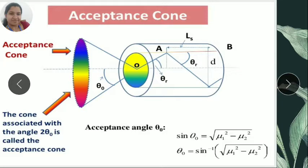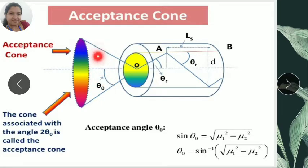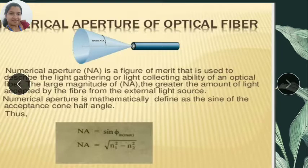The acceptance cone is the region where the light ray enters into the optical fiber. If the light ray enters through this acceptance cone, it can be propagated through the optical fiber by total internal reflection.